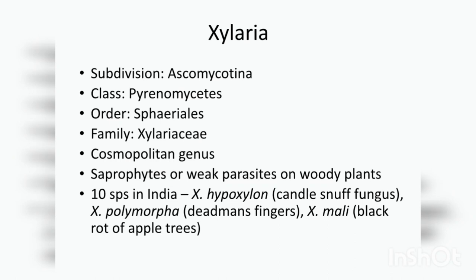During sexual reproduction, sexual spores or ascospores are produced endogenously. Ascospores are also called meiospores and they are formed by meiosis in sac-like sporangia called ascus. Each ascus consists of a definite number of ascospores, usually 8 or multiples of 8. The definite fruiting body is called ascocarp. During gametic fusion, plasmogamy is not immediately followed by karyogamy, and there is an intermediate phase called the dikaryophase.